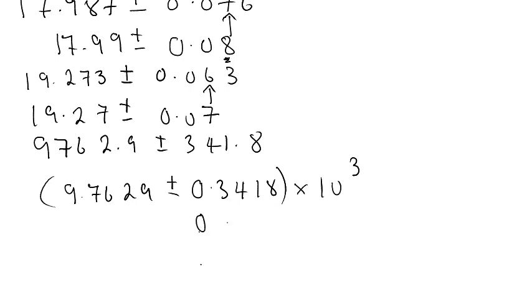When you see the 0.3418, you round, remember you round up, it becomes 0.4. And this number here becomes simply 9.8 plus or minus 0.4 times 10 to the 3. Don't forget the 10 to the 3.